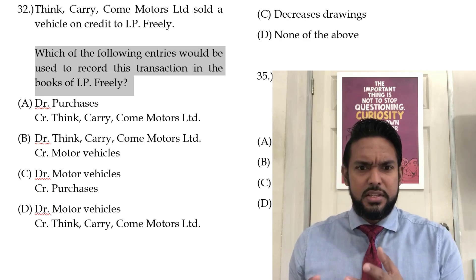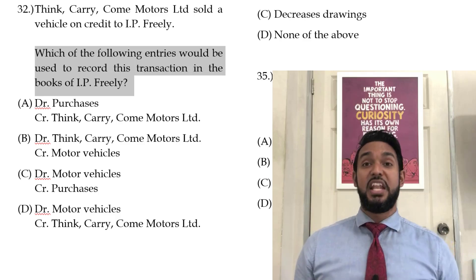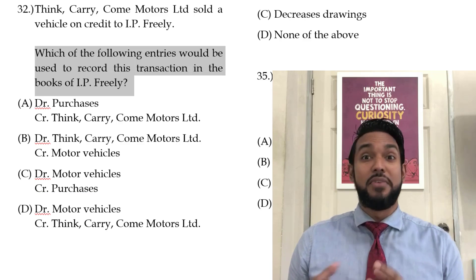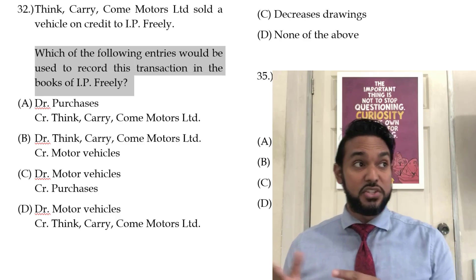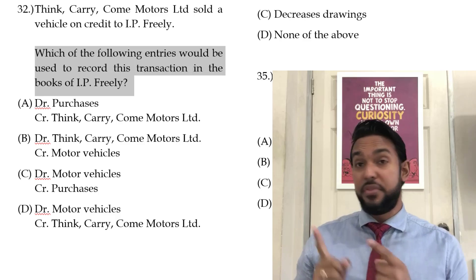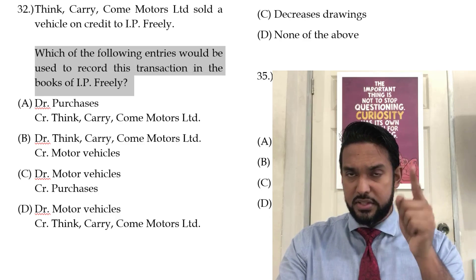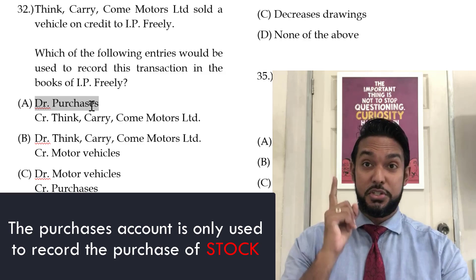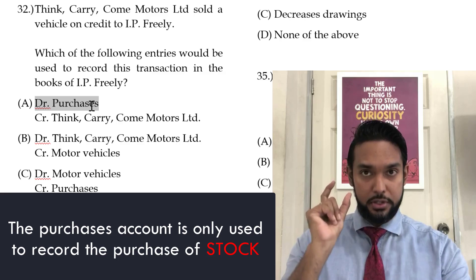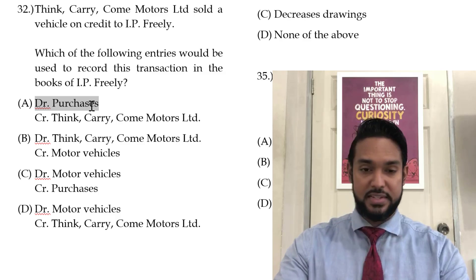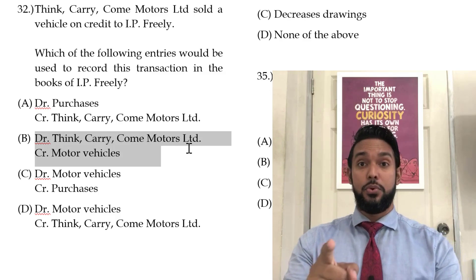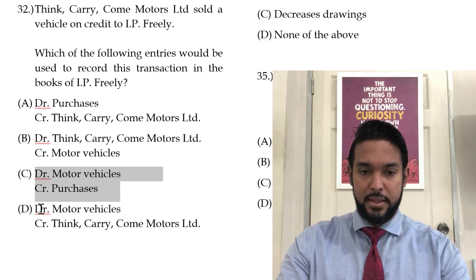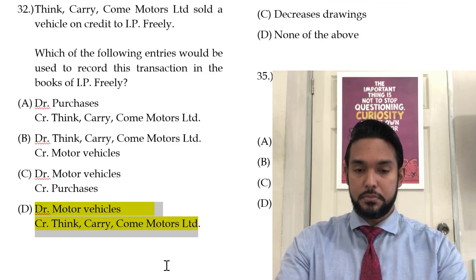Where is the motor vehicle coming from? Think Carry Come Motors Limited. Using the double entry hack — credit where it's coming from, debit where it's going. The value of the motor van is going to the motor vehicles account, and it's coming from Think Carry Come Motors Limited. So we're looking for a debit to motor van and a credit to Think Carry Come Motors Limited. Item one has a debit to purchases — remember, purchases is only for stock. Another option is debit Think Carry Come, credit motor vehicles — that's a reversal. The correct answer is debit motor vehicles, credit Think Carry Come Motors Limited.